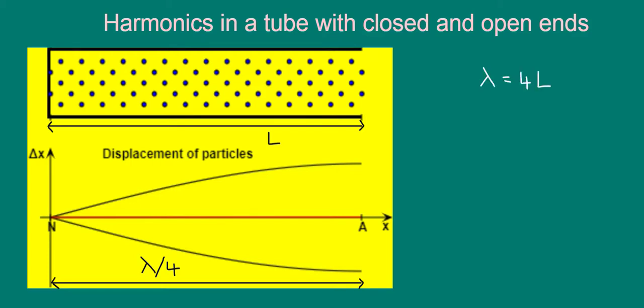Meaning that lambda, the wavelength, is equal to 4L. Using the wave equation, v equals f lambda, where v is the speed of the sound waves, we get that the frequency of this first harmonic, f1, is equal to v over 4L.